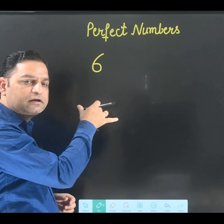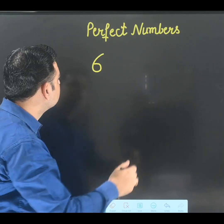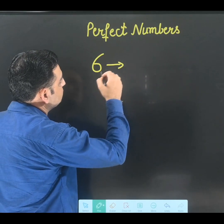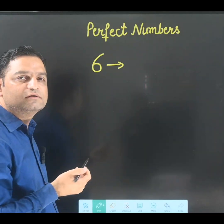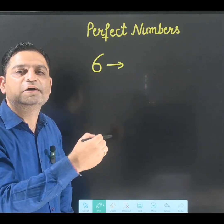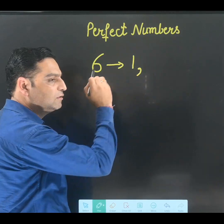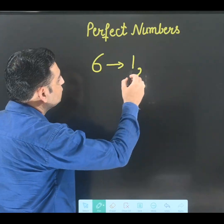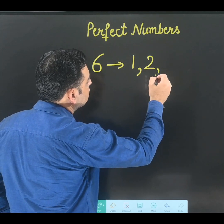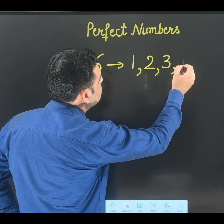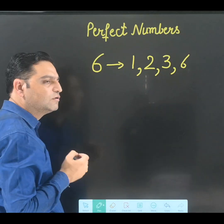What are the factors of 6? Factors of 6 means which numbers divide 6. Like, 6 comes in the table of 1, it's a factor. 6 comes in the table of 2, in the table of 3, and in the table of 6 as well.